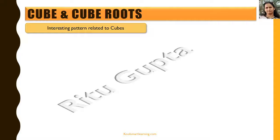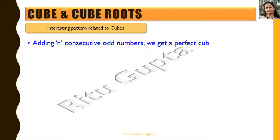Now let's look at an interesting pattern: adding n consecutive odd numbers gives a perfect cube. The important thing to understand is that this is not adding n consecutive odd numbers starting from 1 — it is adding some specific n consecutive odd numbers to get a perfect cube of n.